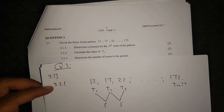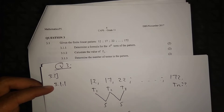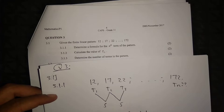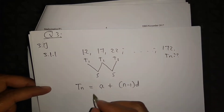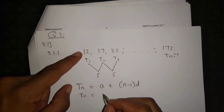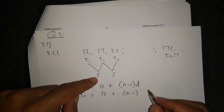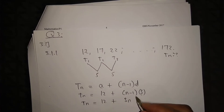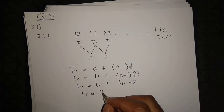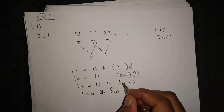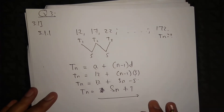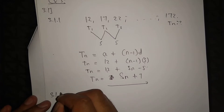So the first term is 12, and we need the nth term. The nth term of a linear pattern is found using this formula, where a is the first term and d is the common difference. Plugging in our values: tn = a + (n−1)d. So the nth term equals 12 + (n−1) times 5. Therefore tn = 12 + 5n − 5, which gives tn = 5n + 7. So our nth term formula is 5n + 7.